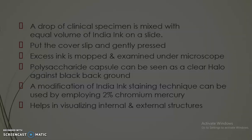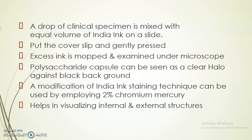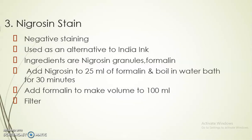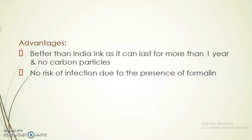A modification of India ink staining can be used with 2% chromium mercury, which helps to visualize both internal and external structures. The third stain is nigrosin staining, a negative staining method used as an alternative to the India ink method. Ingredients are nigrosin granules and formalin. Nigrosin is added to 25 ml of formalin and boiled in a water bath for 30 minutes. After boiling, the volume is increased by adding 75 ml of formalin to make a total of 100 ml, then filtered and stored. Advantages: it lasts more than one year, there is no formation of carbon particles so periodic filtering is not necessary, and since formalin is added there is no risk of infection.